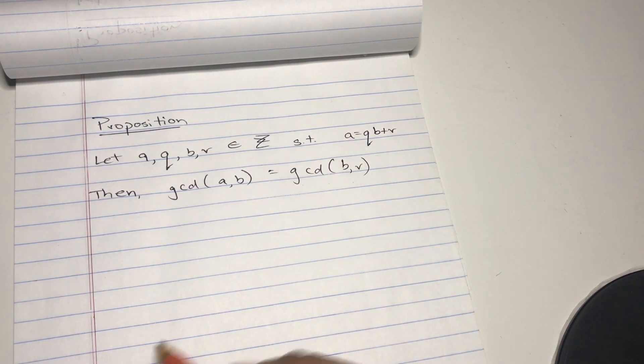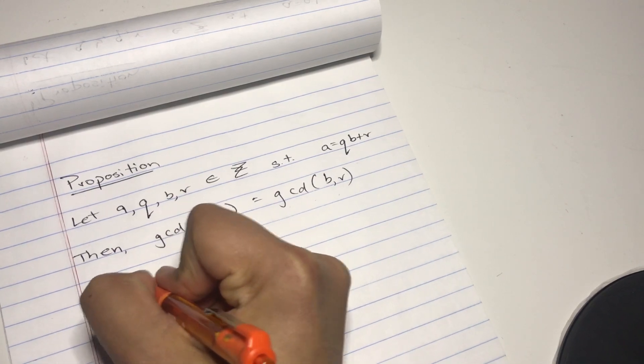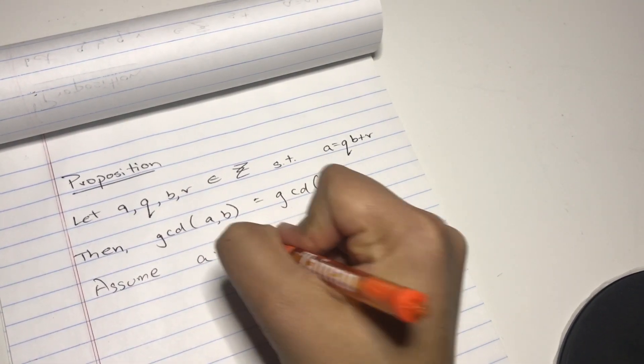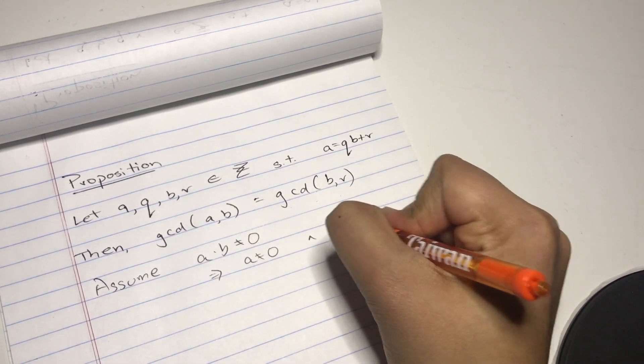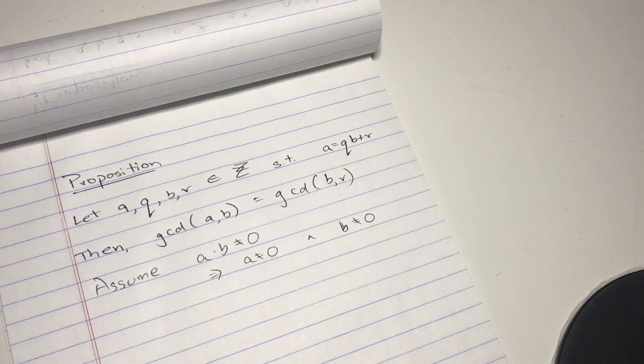So yes, we have to prove this. We could actually, before we start off, assume ab does not equal zero, which actually means a does not equal zero and b does not equal zero. Because if this is the case, then this whole thing becomes a moot point. It's fair to assume this.